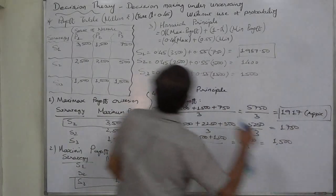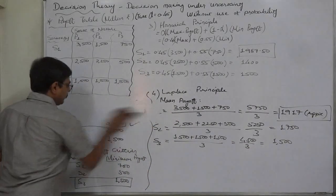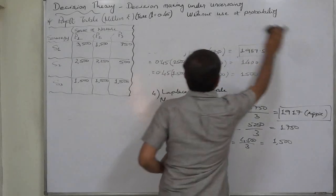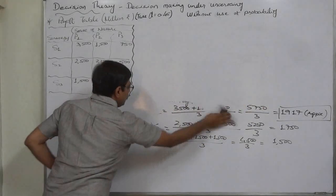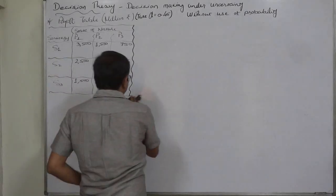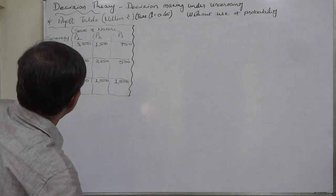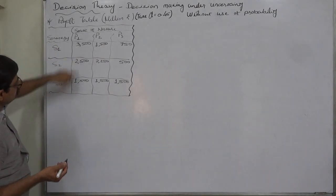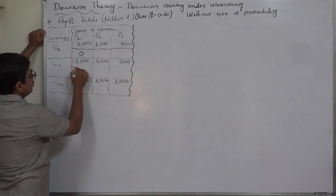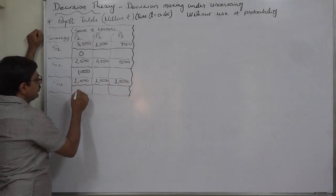For the regret criteria, we need to prepare a regret table from the payoff data. We select the highest payoff for each state of nature and subtract all payoffs in that column from it. In case of state of nature P1, the highest payoff is 3500. So: 3500 − 3500 = 0; 3500 − 2500 = 1000; and 3500 − 1500 = 2000.